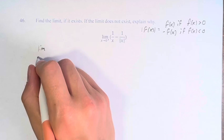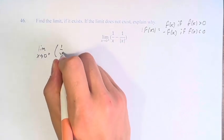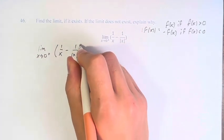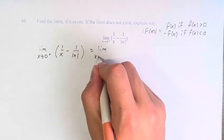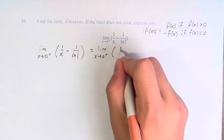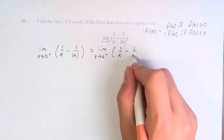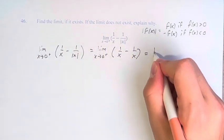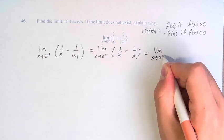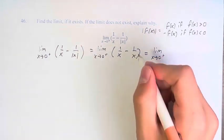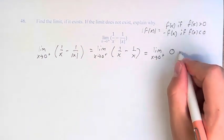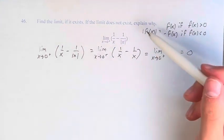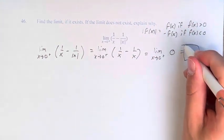So the limit as x approaches 0 from the right of 1 over x minus 1 over the absolute value of x, this is equal to just simply 1 over x minus 1 over x. 1 over x minus itself, anything minus itself, is just 0. And the limit of 0 at any value of x is just 0. Therefore, the value of this limit is 0.